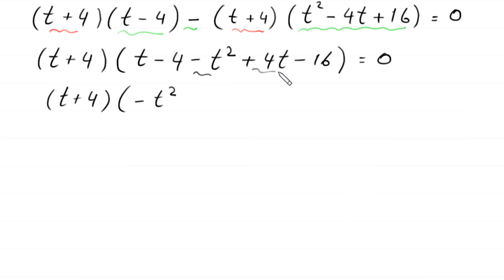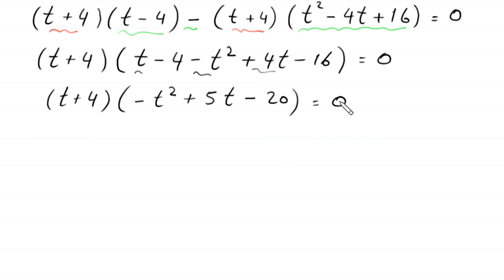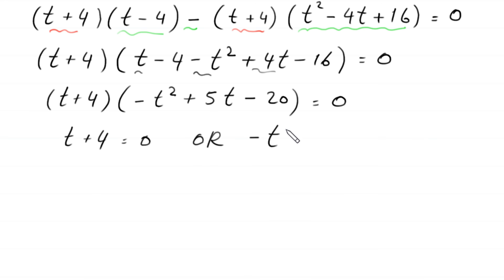Combining like terms: 4t plus t equals 5t, and negative 4 minus 16 equals negative 20. So the second factor becomes negative t² plus 5t minus 20, equal to 0.